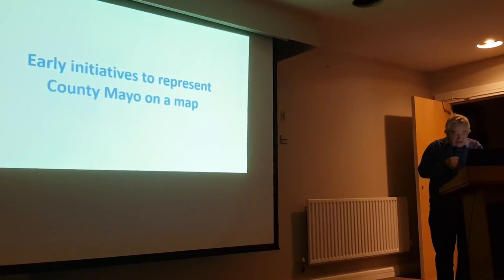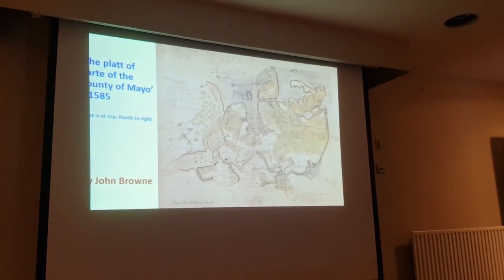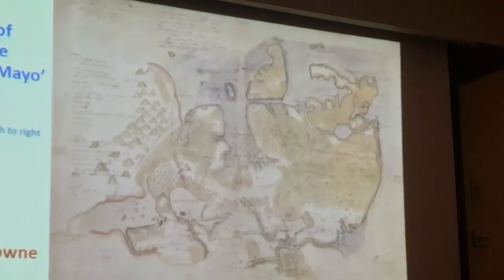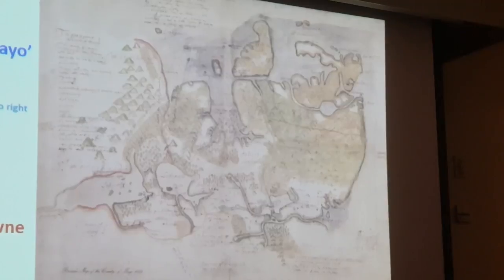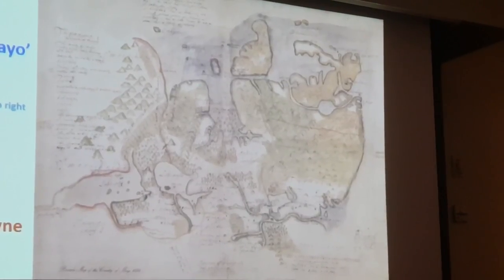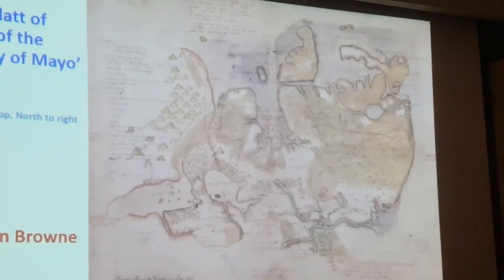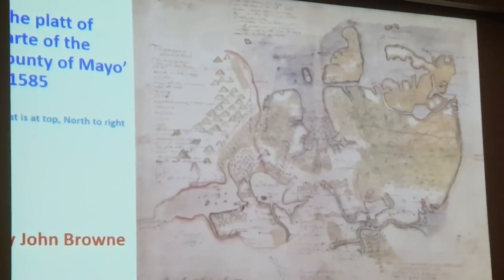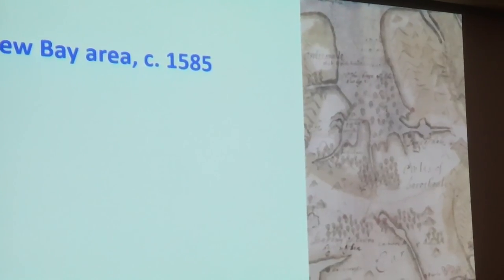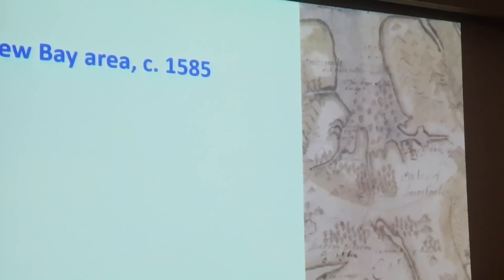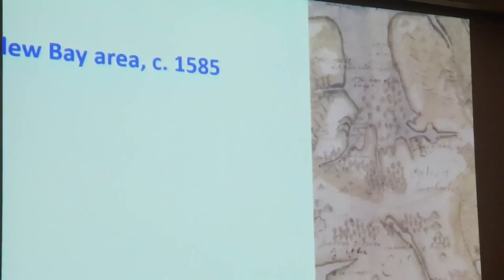Think a little bit about early initiatives to represent Mayo on a map. This is probably the earliest map that attempts to represent Mayo. It was constructed by somebody probably called John Brown — there were two John Browns, an uncle and a nephew — and John Brown probably made this map in the mid-1580s. As you can see, Mayo is on its side, with north to your right. Clew Bay is there in the middle, and this man manages to quite convincingly show the island-studded nature of Clew Bay on this particular map.